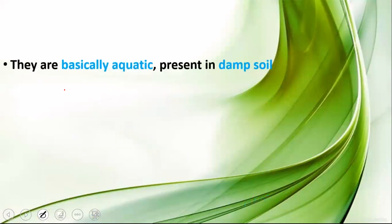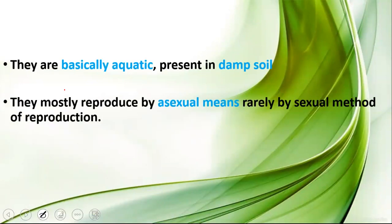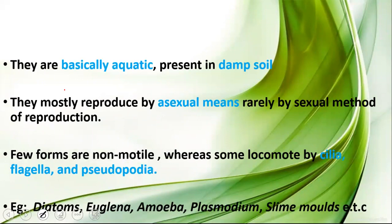Protists are basically aquatic and are present in damp environments. They are mostly reproduced by asexual means and rarely by sexual reproduction. Some of them have locomotory organs for movement, while some are non-motile. Some move by the help of flagella, some by cilia, and some by pseudopodia. General examples include diatoms, Euglena, Amoeba, Plasmodium, and slime molds.